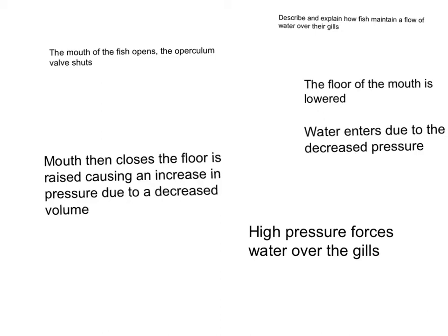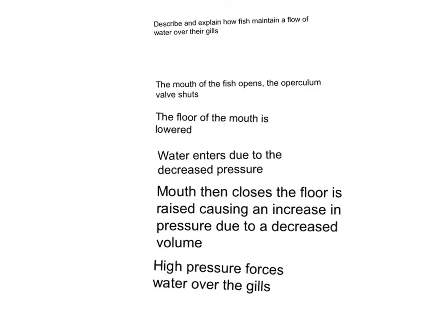This is a full mark question. These are the points you need for the full marks. The question is: describe and explain how fish maintain a flow of water over their gills. The mouth of the fish opens, the operculum valve shuts, the floor of the mouth is then lowered, and water enters due to decreased pressure. The mouth then closes, the floor is raised, causing an increase in pressure due to decreased volume. High pressure forces water over the gills.